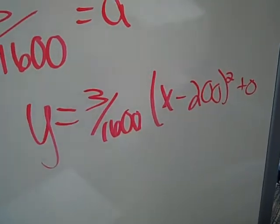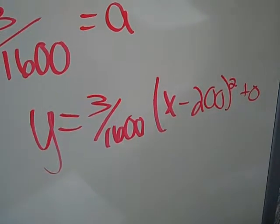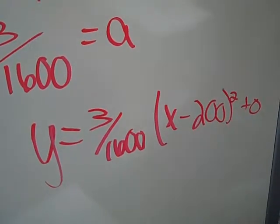We then plugged it back into the original equation to get y equals 3 over 1600 times x minus 200 squared plus 0.